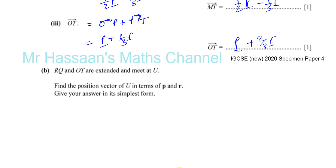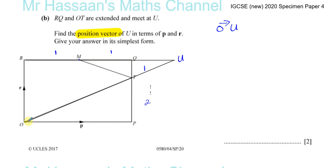Find the position vector of U in terms of p and r, giving your answer in its simplest form. The position vector means the position of a point with respect to the origin. Whenever you see 'position vector,' there will always be an O in the question — that is the origin. So the position vector of U means the vector from O to U.